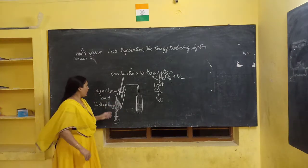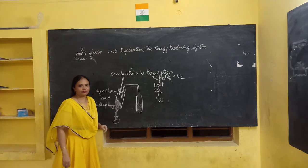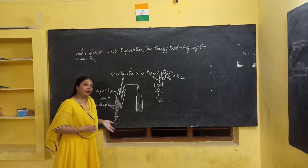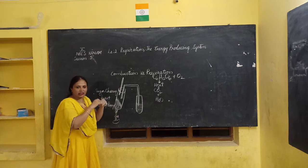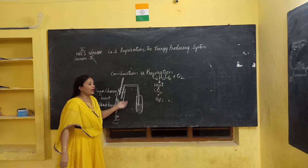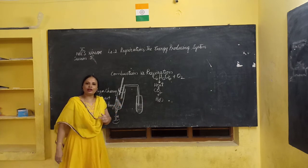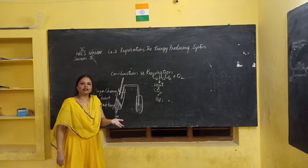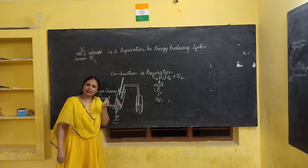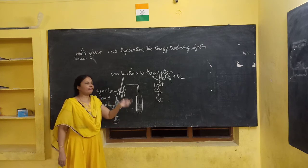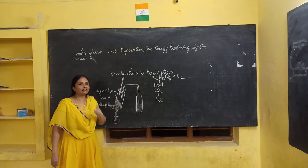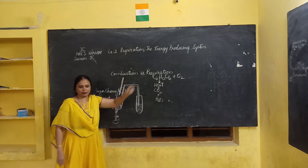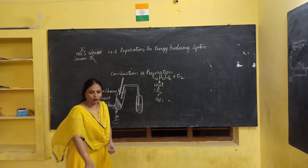Just imagine I pour water on this burning glucose — will it burn? If I pour water on it, it will not burn; it will suddenly stop burning. In our body, without water, is there any single cell present? Every burning takes place in the presence of water. That is the difference between combustion and respiration.